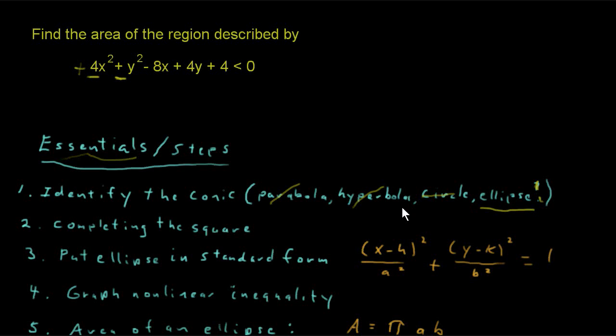So what we have here is an ellipse, and to put it in standard form, we need to know how to complete the square and then put it in standard form, which looks like this: (x - h)²/a² + (y - k)²/b² = 1.